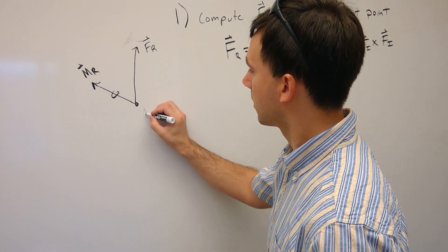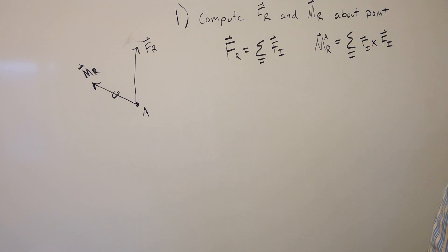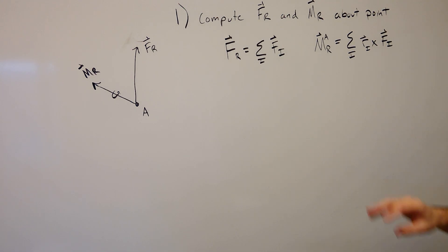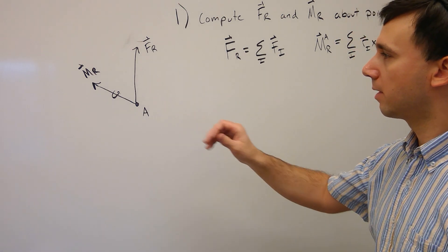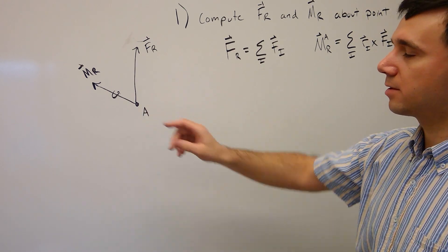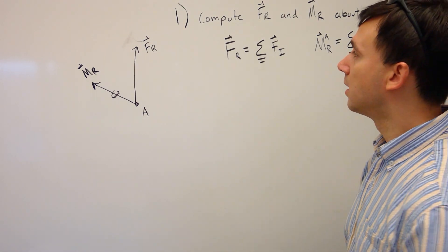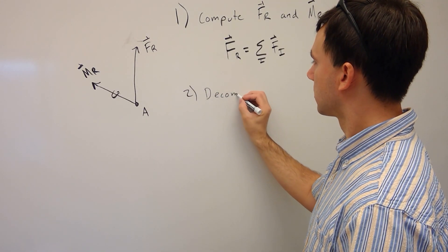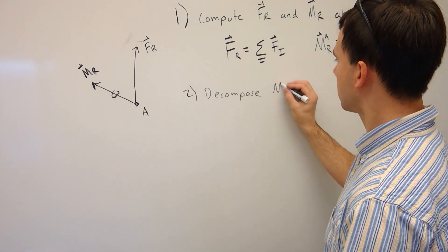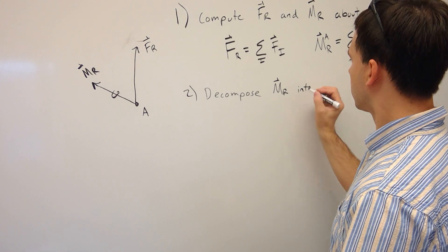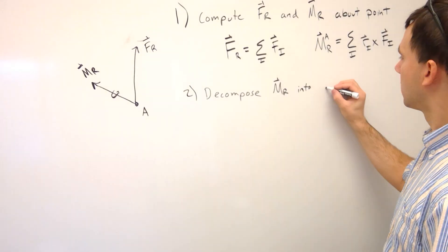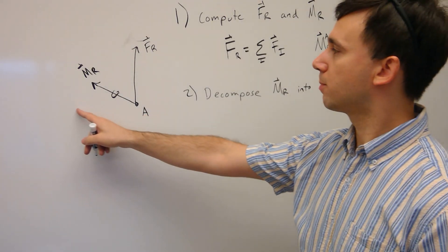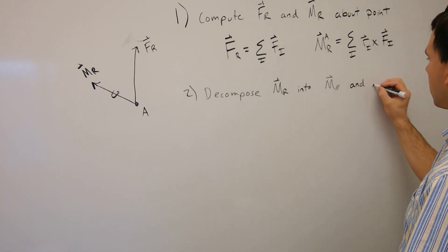Here you have point A and the two resultants. The next step, in the general case as you have in your homework, these are not perpendicular to each other and not parallel to each other. So the next step is to decompose the resultant moment MR into a part that is parallel to the resultant force, M_parallel, and a part that is perpendicular to the resultant force, M_perpendicular.